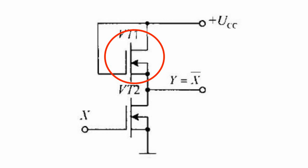It is connected to the positive power supply. The positive voltage of the input variable is applied to the gate of input transistor VT2 with an induced channel.